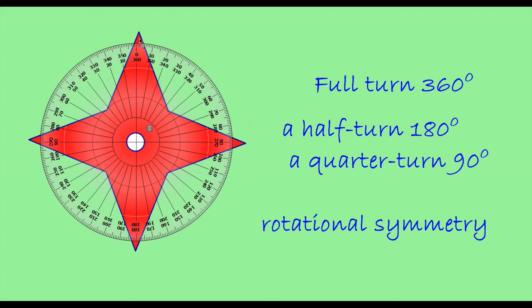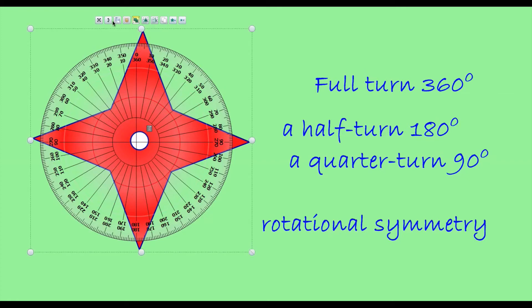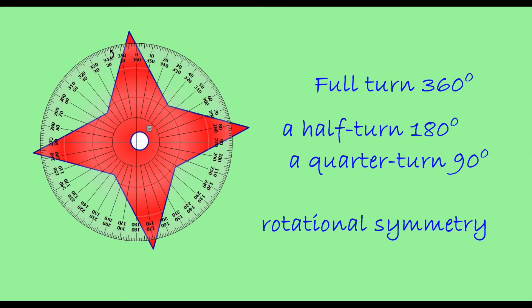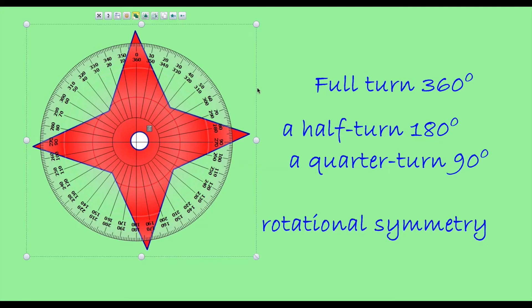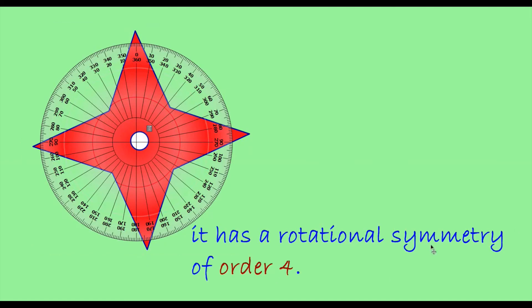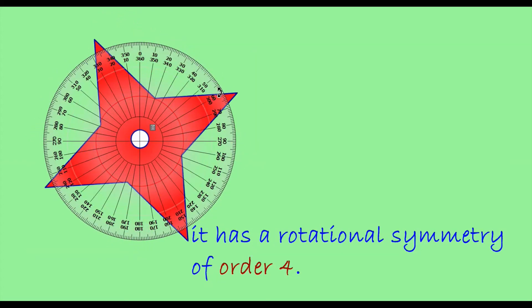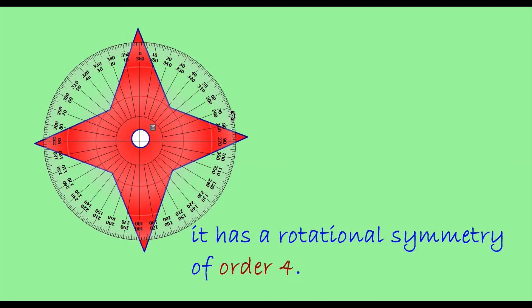In a full turn, this object looks exactly the same at four positions: 90 degrees, 180 degrees, 270 degrees, and 360 degrees. Because of this, we can say it has a rotational symmetry of order 4, and the angle of rotation is 90 degrees.